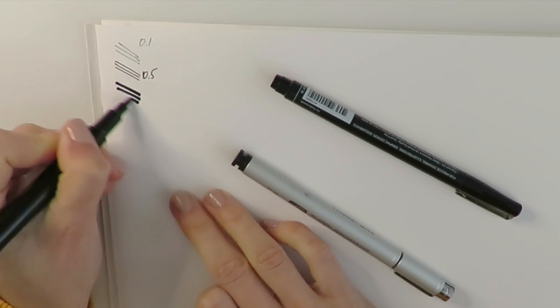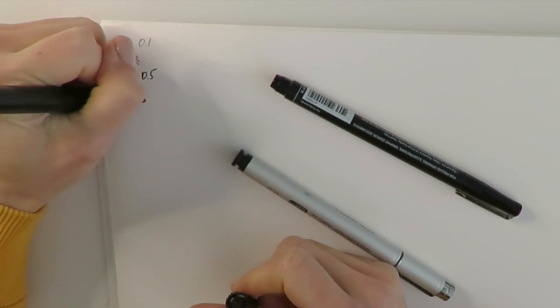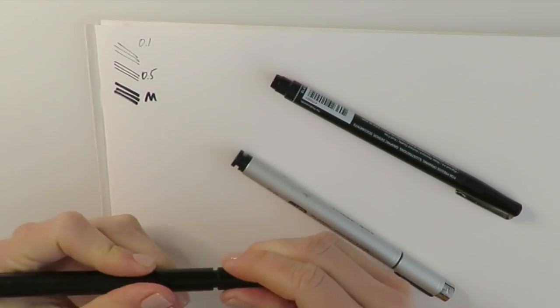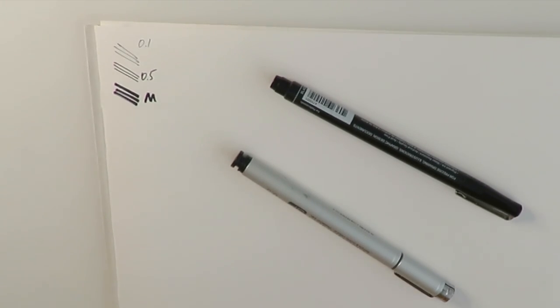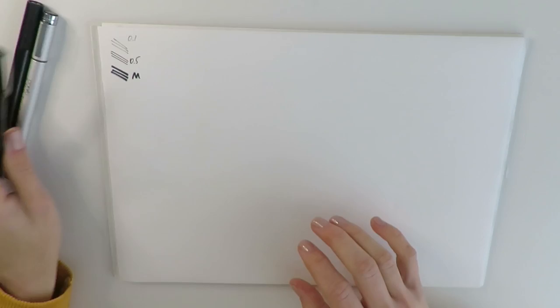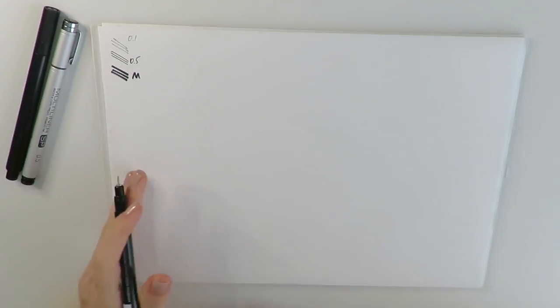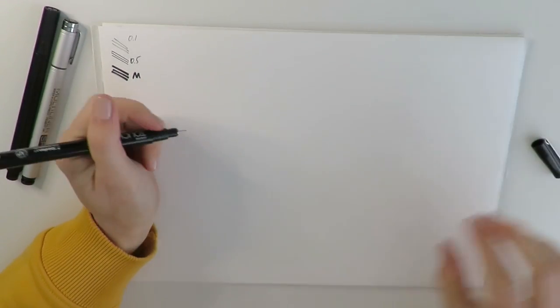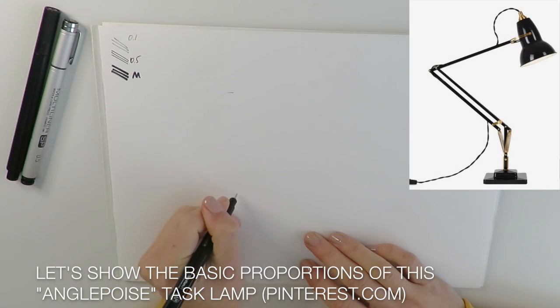And the last one, the third one, it's more like a marker so let's call it M marker and you can see that it gives us the thickest line. You can use any black liners, any brands, even black gel pens that you can find in your place right now.